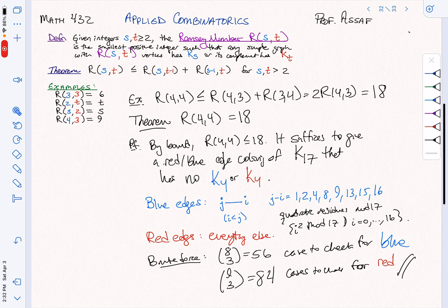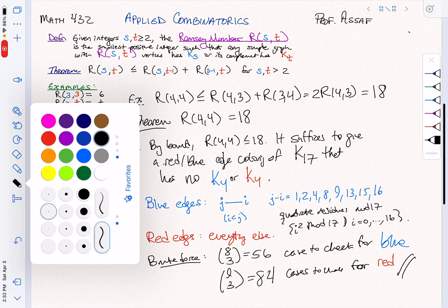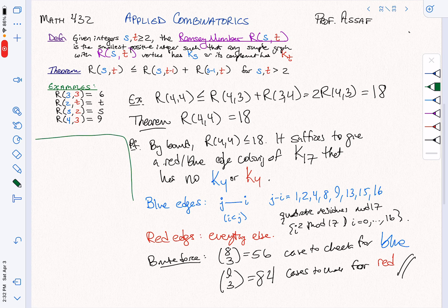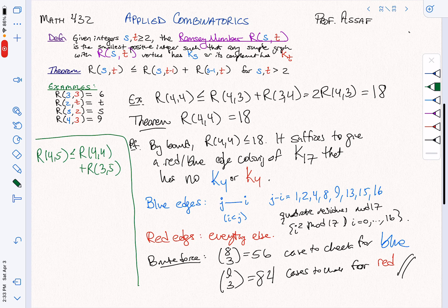So you might ask yourself, can we just kind of go on with this forever? And that's a really good question. And the answer is no, not really. So if we wanted to compute R of 4, 5, we could do a lot of work. So we know what is this by the bound. It's going to be at most R of 4, 4, plus R of 3, 5. Well, we haven't actually computed R of 3, 5, but that's something that you can compute, and it's not that bad. So R of 4, 4 we just computed. We skipped a few of the details. It's 18. R of 3, 5, I'll tell you, is 14. So we get a bound of 32.